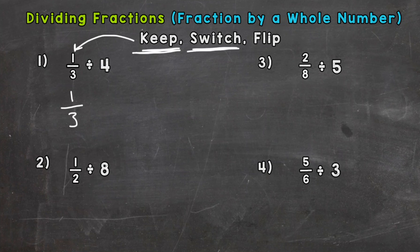Then we switch. We need to switch this division sign to the opposite, the opposite of division, which is multiplication. And then we have flip. And we're going to flip this second fraction. But here we have a whole number. So how do we flip a whole number? Well, we need to think about how we would write four so we have a numerator and a denominator.